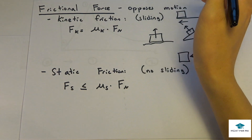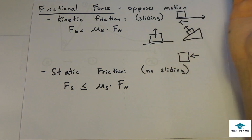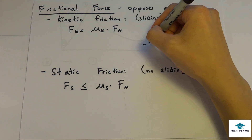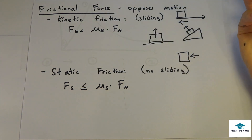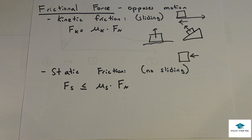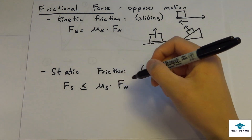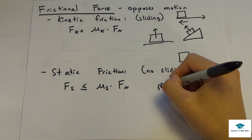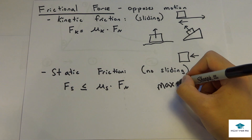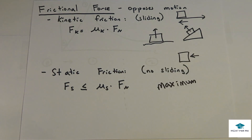Mu k (μk) is the coefficient of kinetic friction — it's a constant for each object-surface pair. Similarly, static friction is Fs = μs × Fn, where μs is the coefficient of static friction. Importantly, this value is the maximum static friction — the object's static friction cannot exceed μs × Fn.